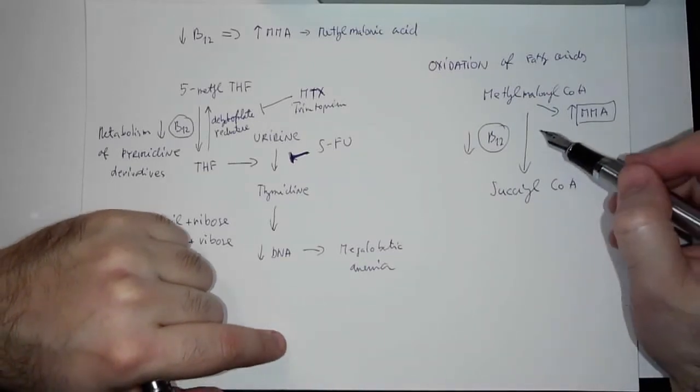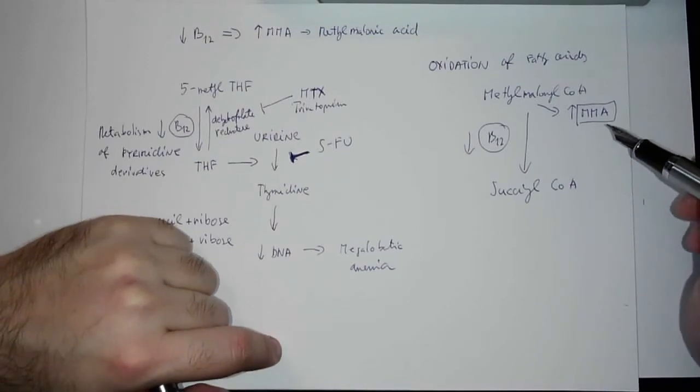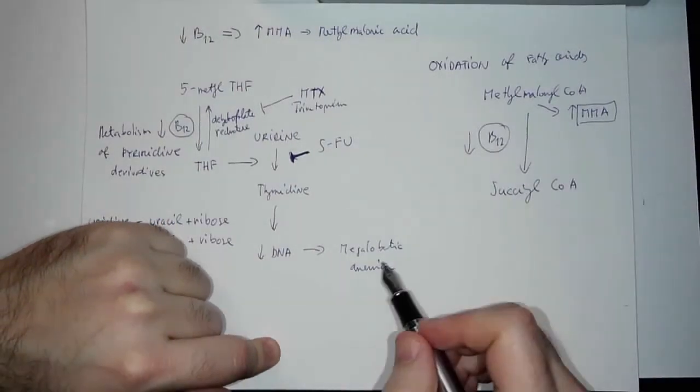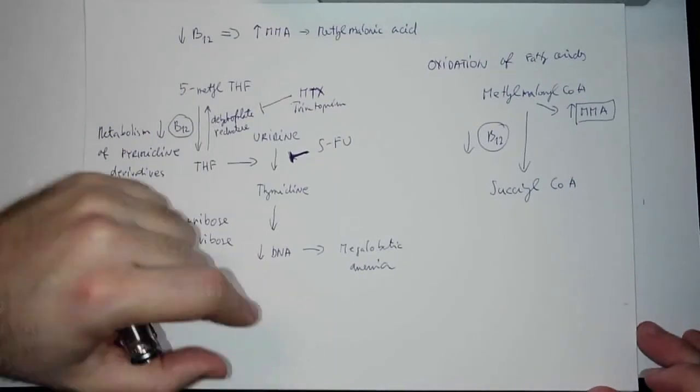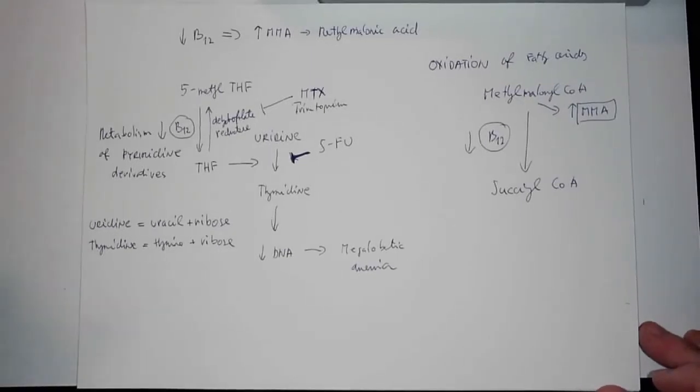This is how you use the MMA. This reaction focuses you to think of B12 deficiency. In case you'll find in the blood smear larger cells with multi-nucleated neutrophils, you're going to check for MMA, and in case this is increased, you can think of megaloblastic anemia.